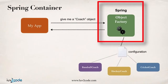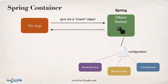We can have our application talk to Spring and say, give me an object. Based on a configuration file or annotation, Spring will give you the appropriate implementation. Then your app is configurable and will have full support for that based on our application requirements.